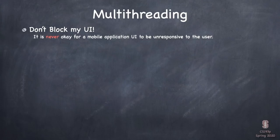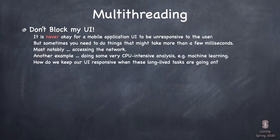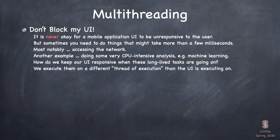It is never okay for your UI to be blocked. If someone reaches with their finger to scroll something or tap a button, your UI has to be ready to do it immediately. But sometimes you need to do slow things — a huge machine learning calculation, or going out over the network, which takes time. So how during that time are you going to not block your UI? By using different threads of execution.